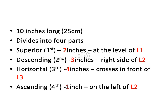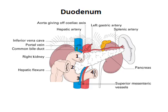The first part of the duodenum is 2 inches long and located at the level of L1 vertebra. The second part is 3 inches long and lies on the right side of L2 vertebra. The third part is 4 inches long and crosses in front of L3 vertebra. The ascending or fourth part of the duodenum is 1 inch long and lies to the left of L2 vertebra. In this picture you can see the first, second, third, and fourth parts of the duodenum.